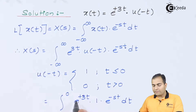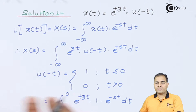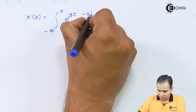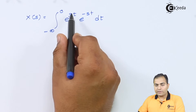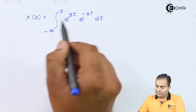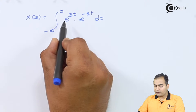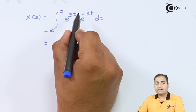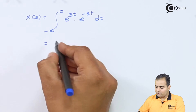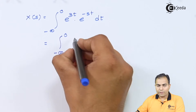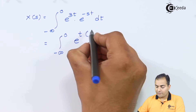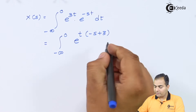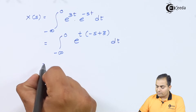We replace the integration limit from minus infinity to 0, and in that period the unit step has amplitude 1. So we integrate e^(+3t) · 1 · e^(-st) dt. After multiplying by 1, we have only e^(3t) · e^(-st) in the integrand. Since the base is the same, we can add the powers. Taking t common, we get e^(t(3 - s)) dt. We now apply the integration.